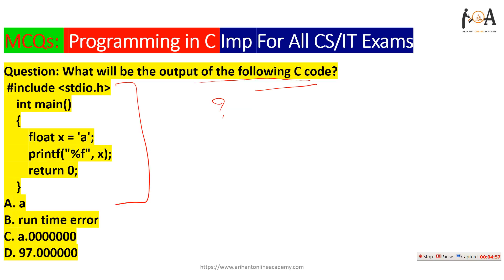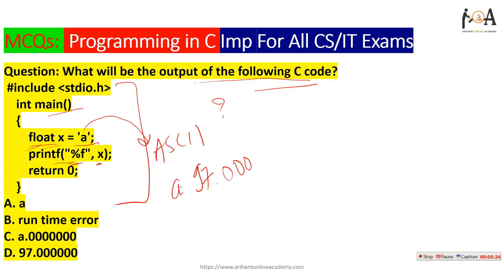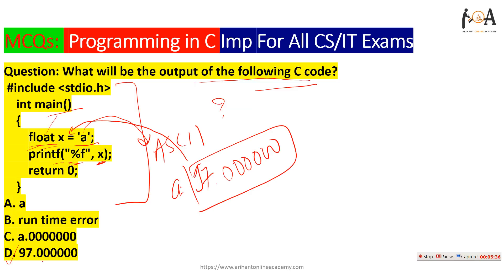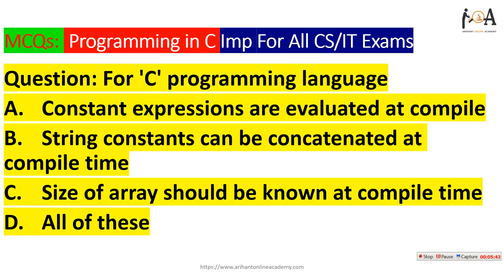The next question involves a C program with #include stdio.h in main, where float x is assigned the value of character 'a', then printf("%f", x) is called. The ASCII value of 'a' is 97, and since it is assigned to a float, the output will be 97.000000. So option D is the output of that program.